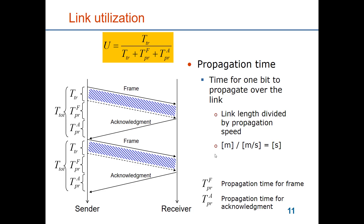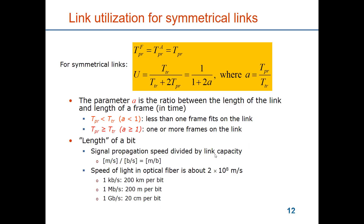Just to be clear: the transmission time is the time measured from when the first bit is being sent out on the link until the last bit is sent out. The propagation time is the time from the first bit being sent out until the first bit arrives at the receiver. For a symmetrical link, we get the utilization being the transmission time divided by the transmission time plus two times the propagation time.